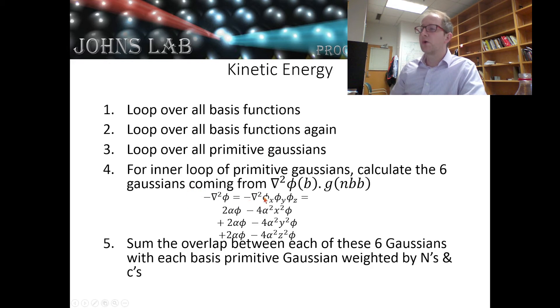We're going to apply the del squared operator onto Gaussian function b and the primitive Gaussian inside that, g(nbb). When we do that, when we take the Laplacian, we get three new Gaussian functions.